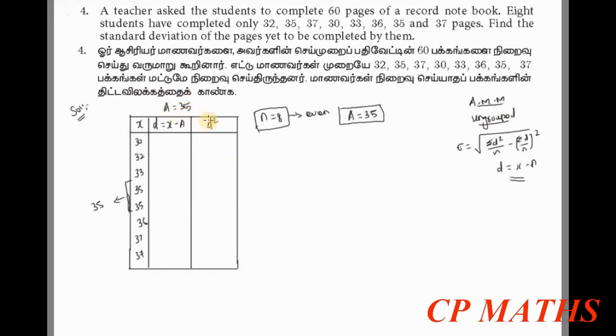Now calculate d equals x minus a. 30 minus 35 is minus 5. This is minus 3. This is minus 2. This is 0. When x equals a, d equals 0. This is 1, this is 2.